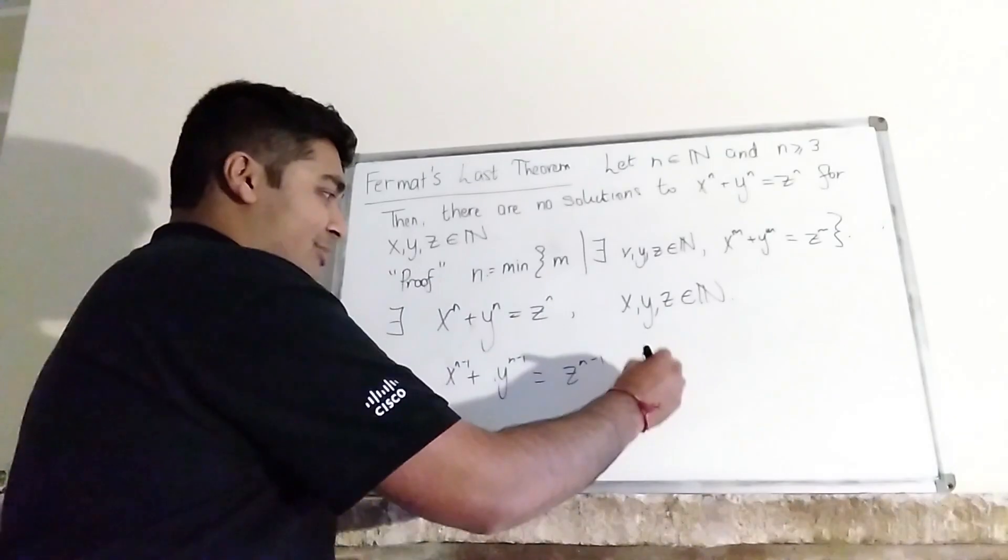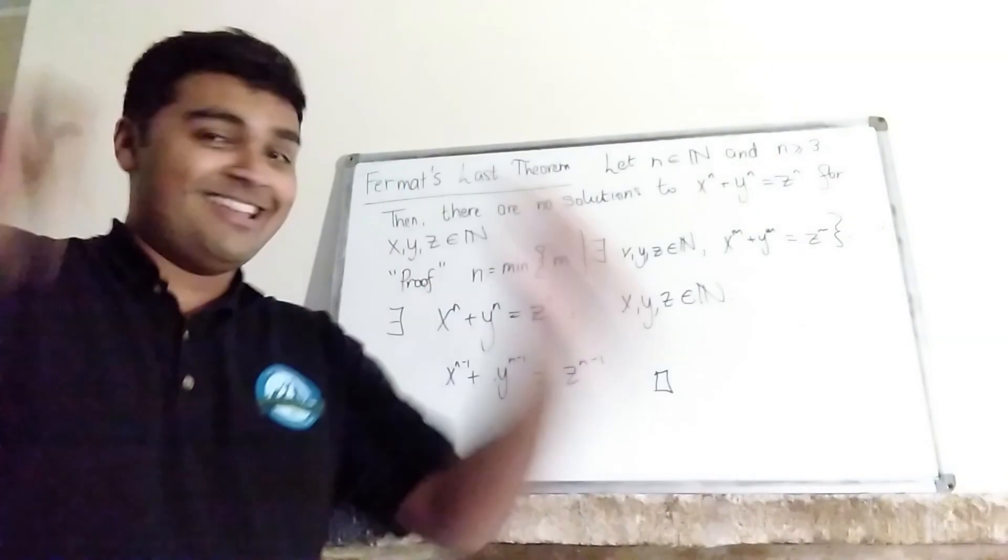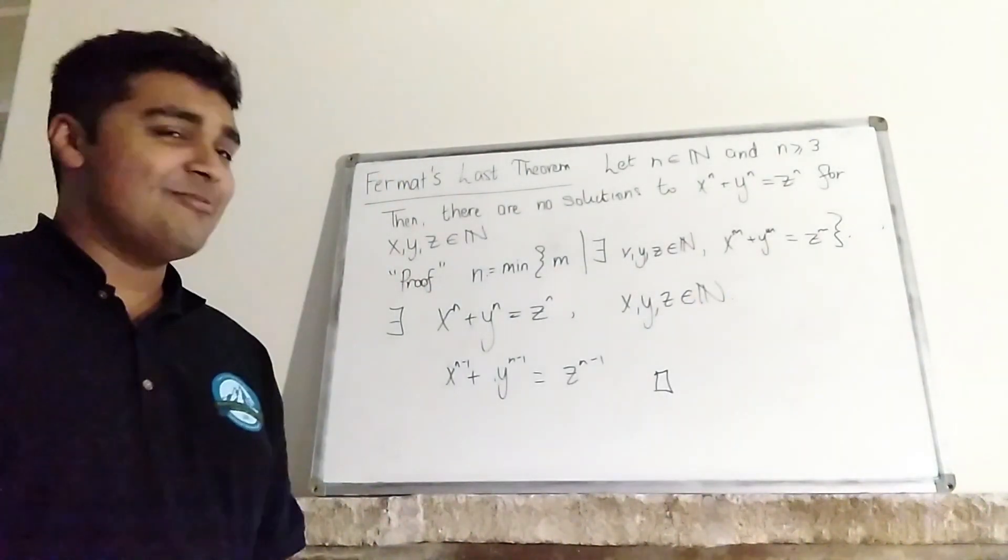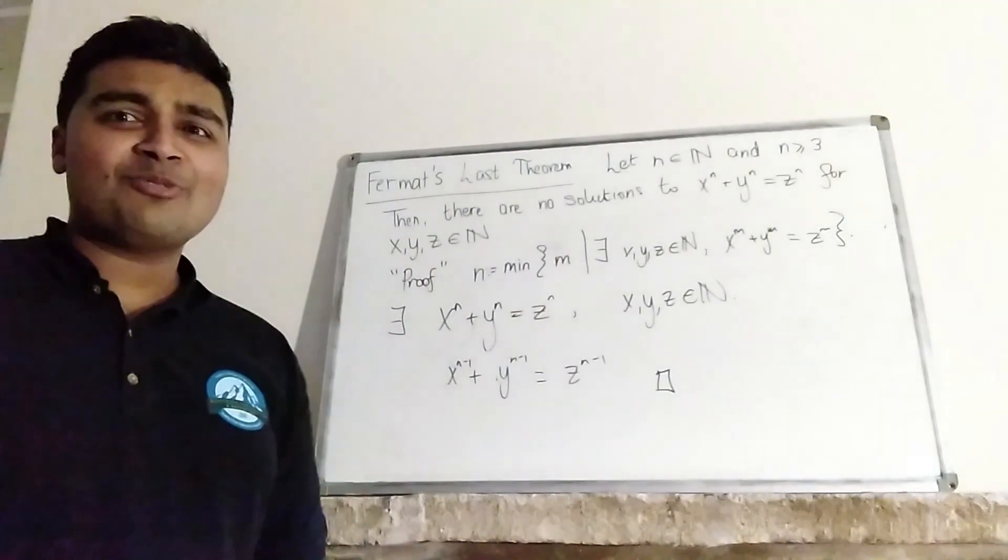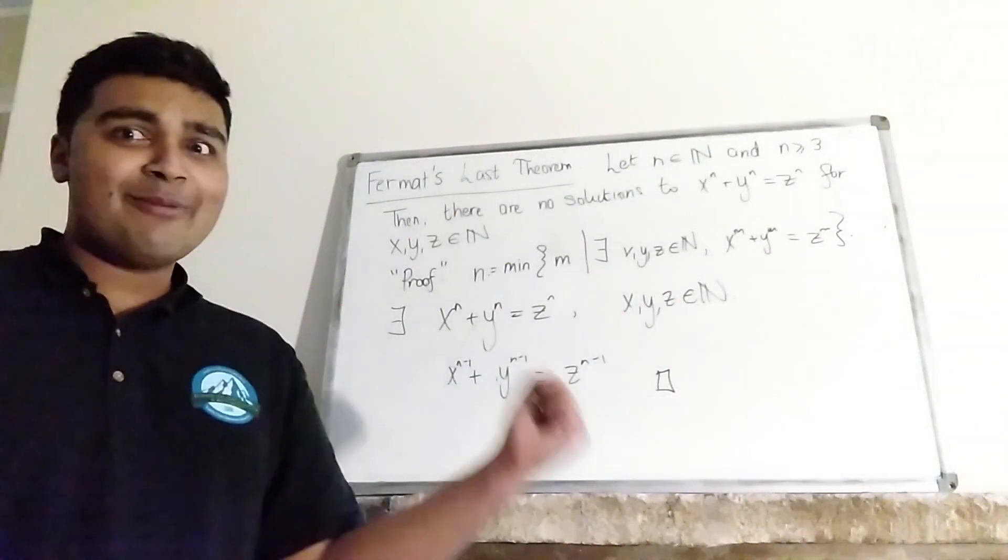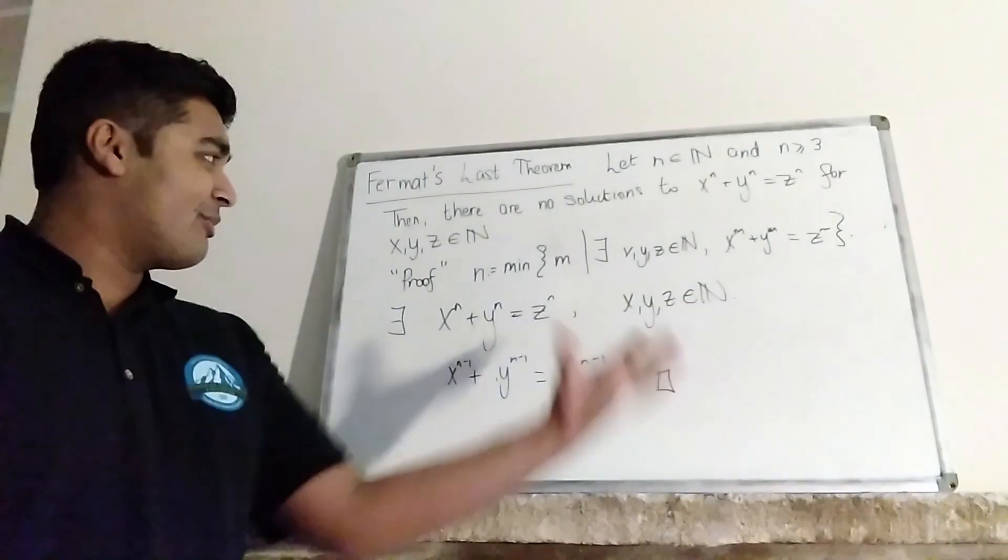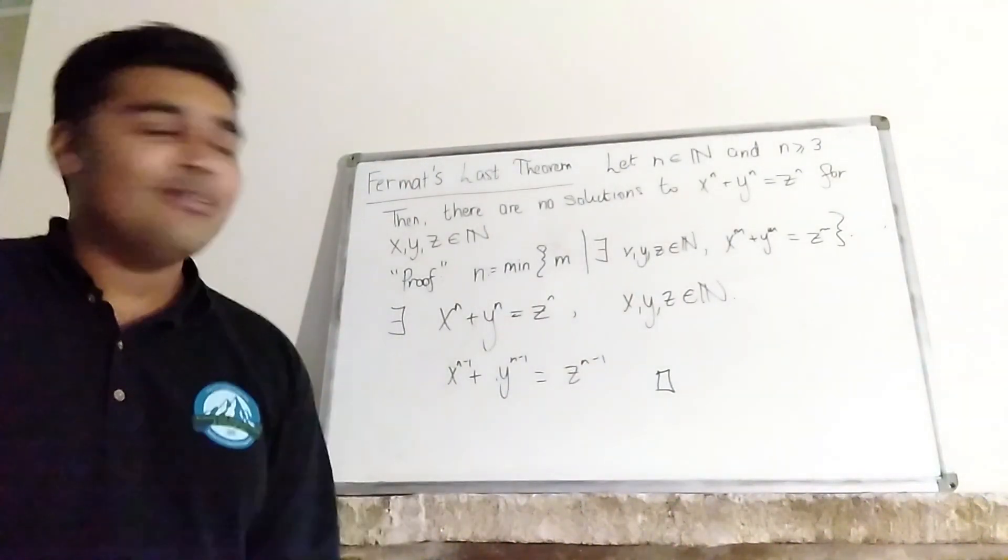So that ends the proof for Fermat's last theorem. Now you may be wondering what the mistake was in this proof. Have I just actually proved Fermat's last theorem in just three or four lines? No, I haven't.